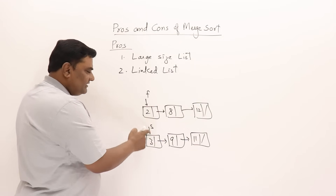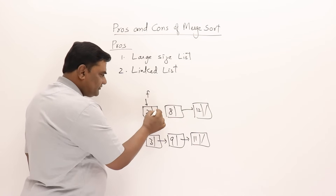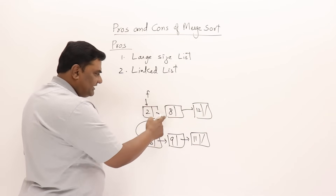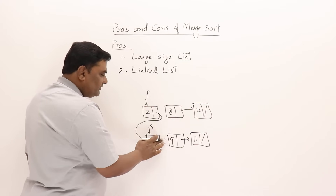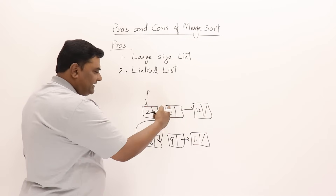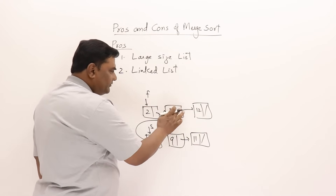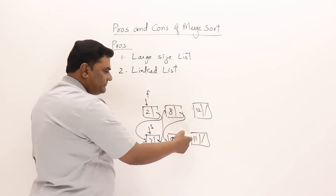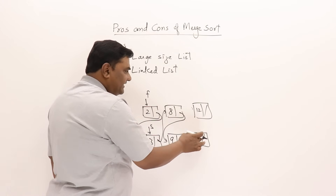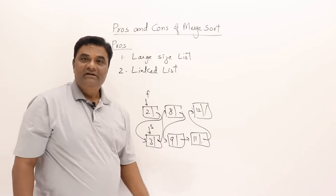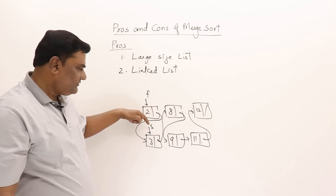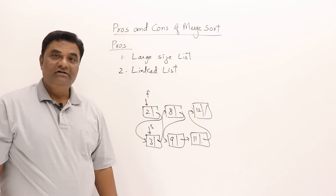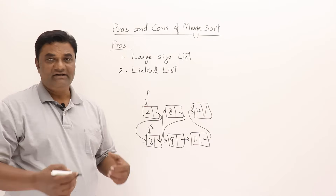Starting the merge process: 2 and 3 — 2 is smaller, so 2 is first. Next, 3 and 8 — 3 is smaller. Then 8 and 9 — 8 is smaller. Then 9 and 12 — 9 is smaller. After merging we get a single sorted list: 2, 3, 8, 9, 11, 12 — sorted without creating a third linked list.